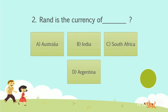Question No. 2. Rand is the currency of which country? Option A: Australia. Option B: India. Option C: South Africa. Option D: Argentina. Your time starts now. The answer is Option C: South Africa.